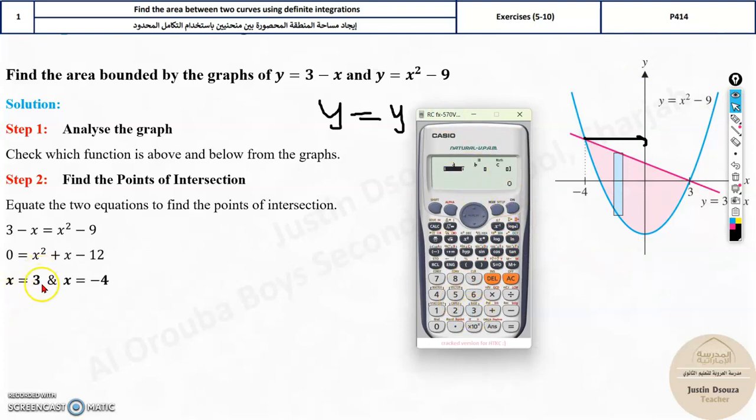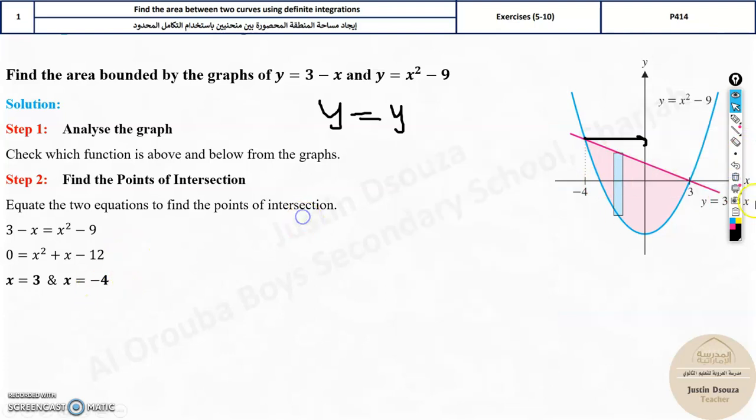You need to go to mode 5 and 3. Put it in the calculator, the coefficients. Before x squared it's 1, before x it's 1, and lastly we have negative 12. So the answer is 3 and negative 4. That's the answer. This is how we find the intersection point, which matches here. They are at minus 4 and 3. These are the limits.